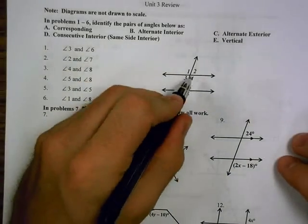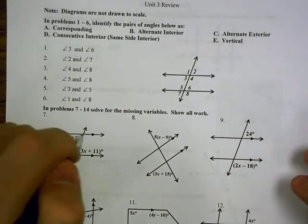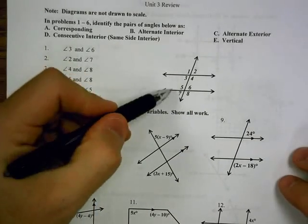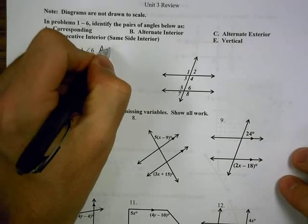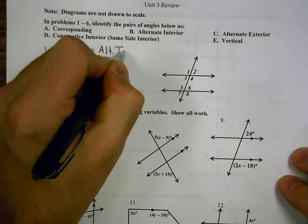So for the first one with angle 3 and angle 6, we look at 3 and 6 that are on opposite sides of the transversal, in between the two lines, so that would be alternate interior angles.